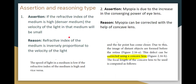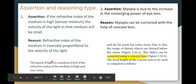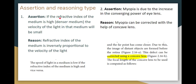Assertion and Reasoning: The refractive index of a medium is high. So the velocity in that medium will be small — they are inversely proportional. The speed of light in a medium is low when the refractive index is high, and vice versa. Because of this inverse proportionality, both the assertion and the reason are correct and properly explained.